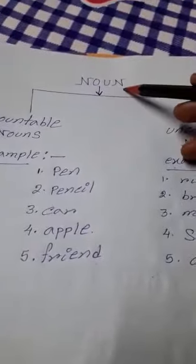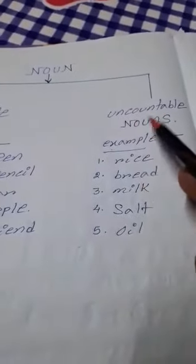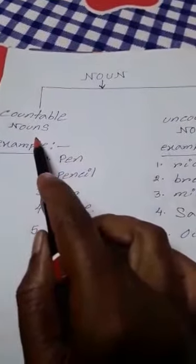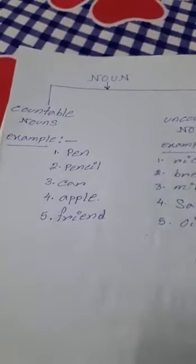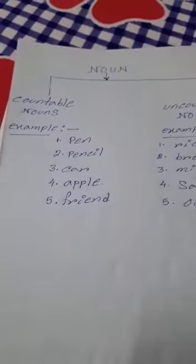We divide nouns into two groups. One is countable nouns, and the other one is uncountable nouns. Countable nouns means the nouns that we can count.